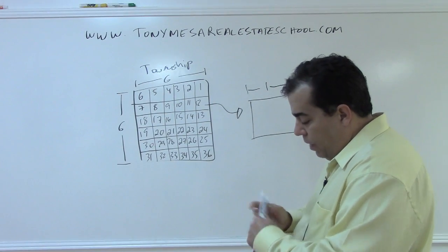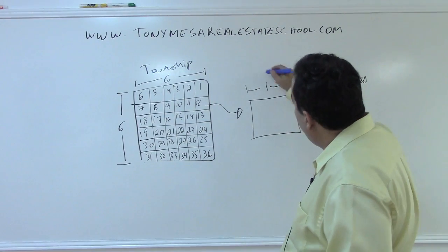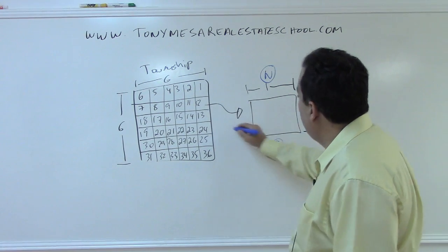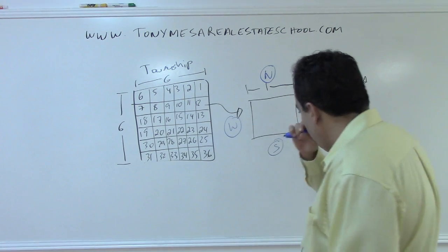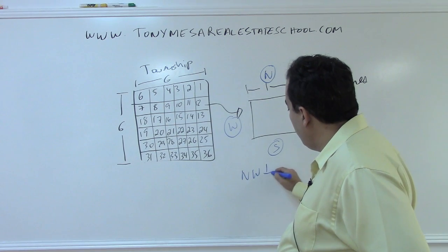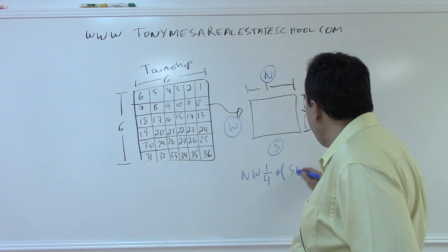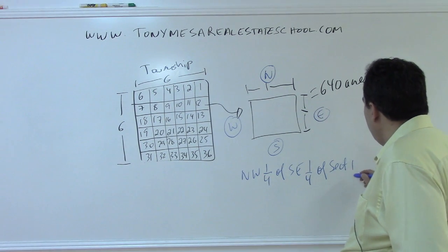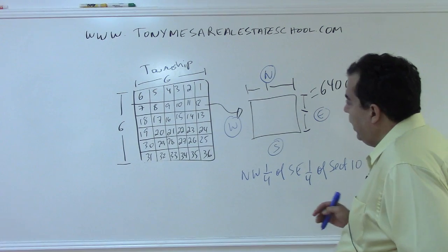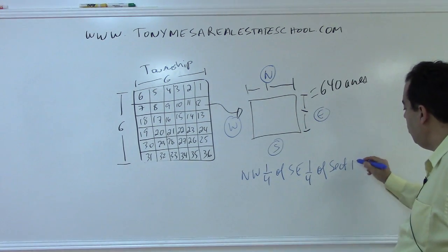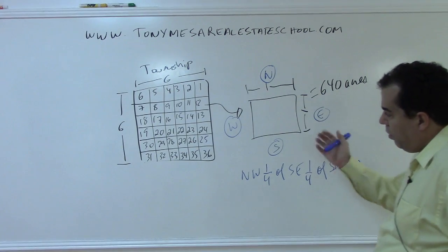So let me draw the directions here. North, south, east, and west. So they might tell you that you're in the northwest quarter of the southeast quarter of section 10, or section 12, we said this would be. So of section 12. It doesn't matter which section. They're all the same size.